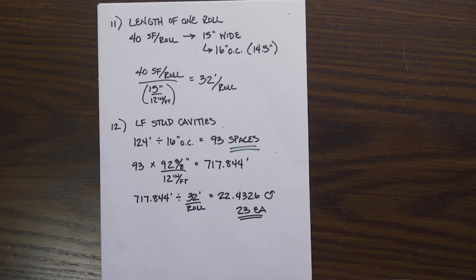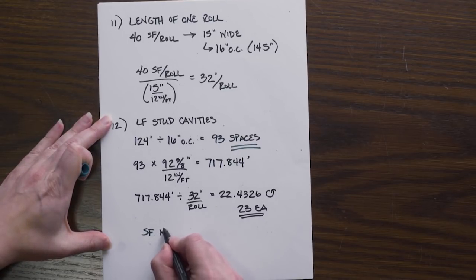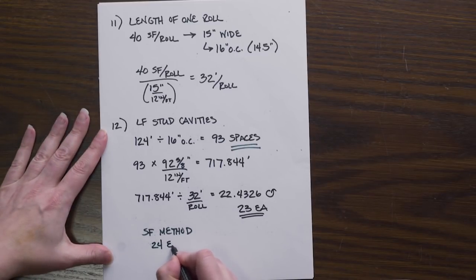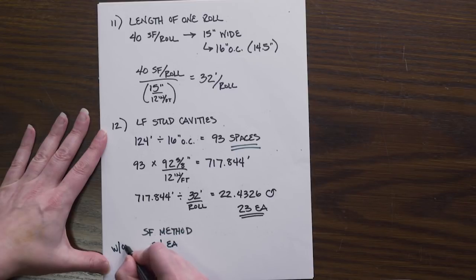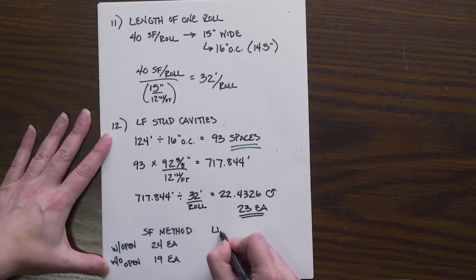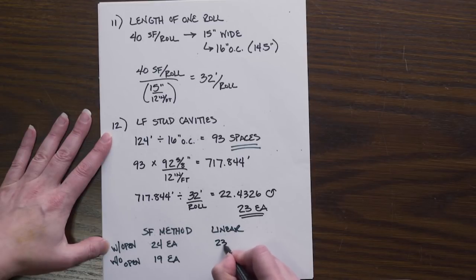If we do a little comparison with a square foot method, we calculated that we are going to need 24 with the openings included. Without the openings we determined that we needed 19. For the linear method we determined with the openings it is 23.